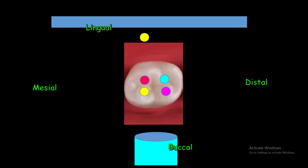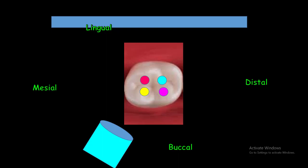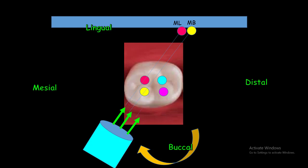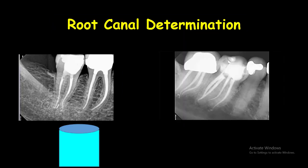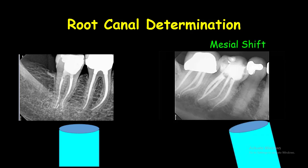In this schematic view of a mandibular molar with four canals — two in the mesial and two in the distal — in the right-angle radiograph, the two canals are superimposed on each other on each side. To split the canals, the tube is shifted mesially. Among the mesial canals, the one imaged more mesially is the mesial lingual canal and the other is the mesial buccal canal. Among the distal canals, the one imaged more mesially is the distal lingual canal and the other is the distal buccal canal. In this radiograph of the first mandibular molar, with the mesial tube shift, the mesial canals are identified as mesial lingual and mesial buccal, and the distal canals as distal lingual and distal buccal. Remember, lingual canals on each side are always imaged more mesially than the buccal canals.